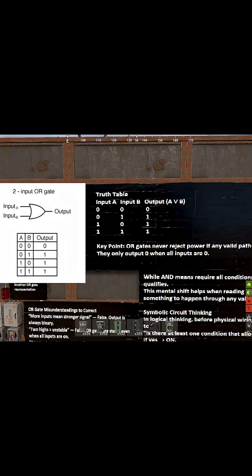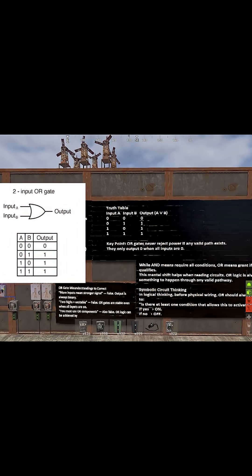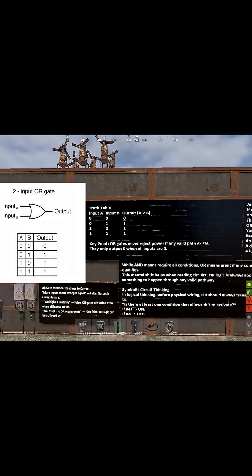Here's the truth table for that form. As you can see: 0 plus 0 is 0, 0 plus 1 is 1, 1 plus 0 is 1, and 1 plus 1 is 1.